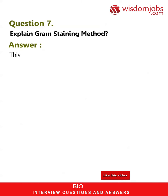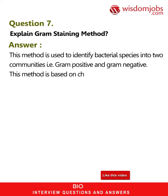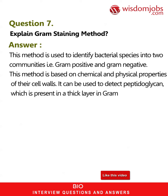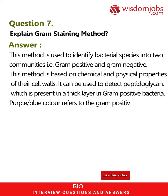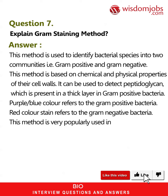Question 7: Explain the gram staining method. Answer: This method is used to identify bacterial species into two communities, i.e., gram-positive and gram-negative. This method is based on chemical and physical properties of their cell walls. It can be used to detect peptidoglycan, which is present in a thick layer in gram-positive bacteria. Purple/blue color refers to gram-positive bacteria; red color stain refers to gram-negative bacteria. This method is very popularly used in the identification of bacterial organisms.